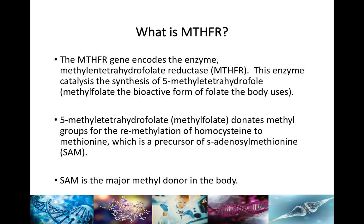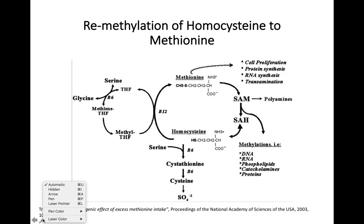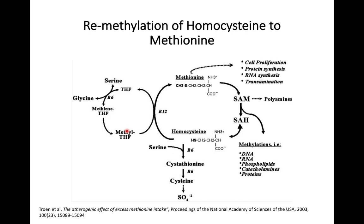This diagram makes it easier to understand. Here we've got methyltetrahydrofolate — MTHFR or methylfolate. The enzyme that converts folate from food into methylfolate is governed by the MTHFR gene, and if you have a mutation in the gene, you can have problems with that conversion. Once you have methylfolate, it moves up this pathway and binds with methyl B12.